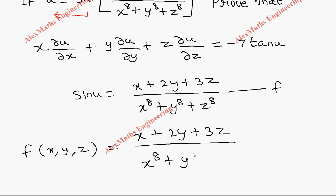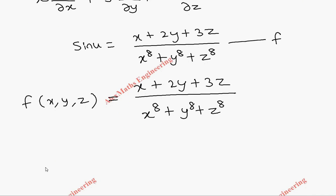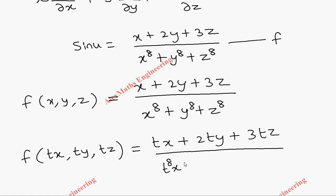So here, tx plus 2ty plus 3tz whole divided by... x power 8 is nothing but t power 8 x power 8 when I substitute in place of x as tx. And it is whole power, so I take the power to both terms separately. In the same way, t power 8 y power 8 and t power 8 z power 8.